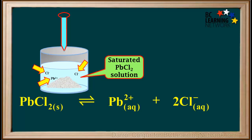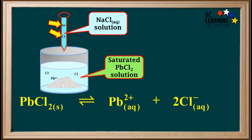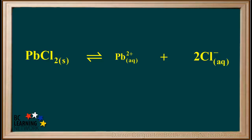Now we'll go back to before we added the NaCl and focus on the ions in these solutions. The saturated lead(II) chloride solution contains Pb²⁺ and Cl⁻ ions, and the NaCl solution in the pipette contains Na⁺ and Cl⁻ ions. Na⁺ ions are spectator ions, so we can discard them. So when we add the NaCl solution, we're actually adding Cl⁻ ions to the beaker.